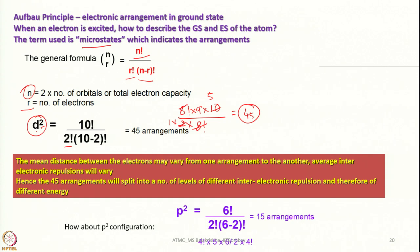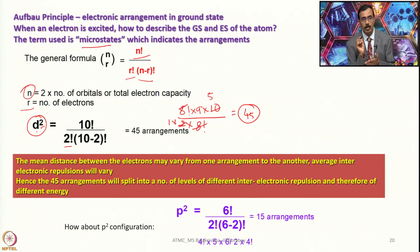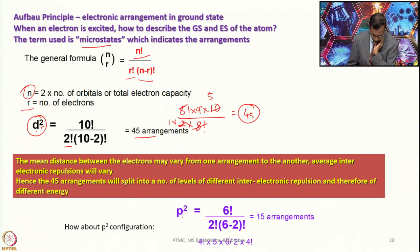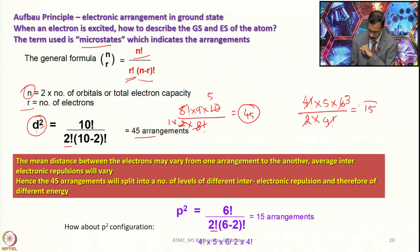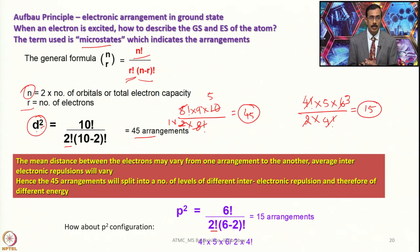For a p2 electronic configuration, the total capacity is 6, so n = 6, r = 2: 6! / (2! × 4!) = (4! × 5 × 6) / (2 × 4!) = 30/2 = 15. That means two electrons present in 3 p orbitals can be arranged in 15 possible different ways. The mean distance between the electrons may vary from one arrangement to another, and average inter-electron repulsion will also vary.